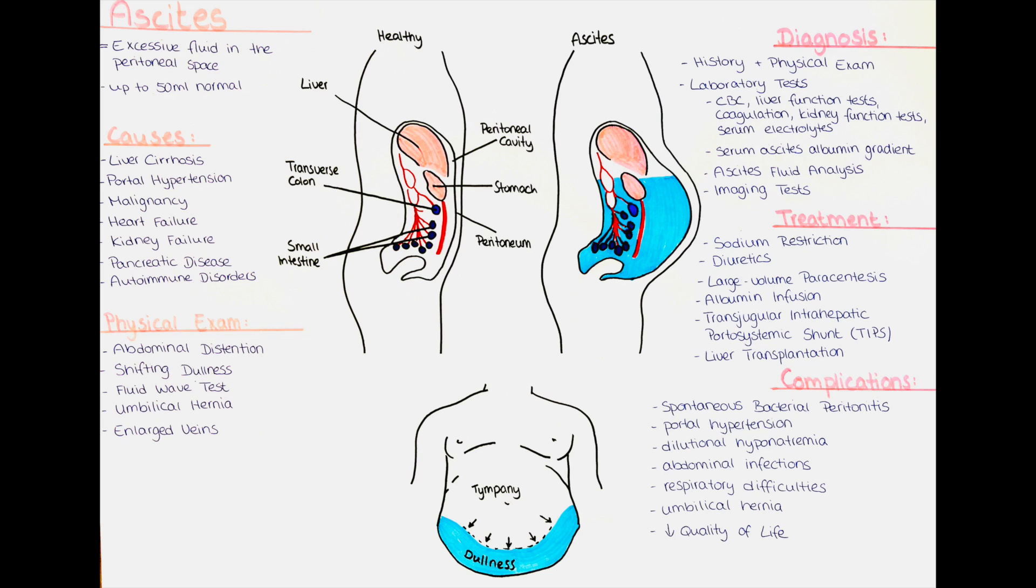With the patient lying flat, bulging flanks can be observed when there is a significant amount of ascites. The lateral flanks protrude and bulge outward due to the fluid accumulation.